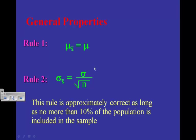Remember that, just like in proportions, the standard deviation rule is approximately correct as long as no more than 10% of the population is included in the sample. You need to consider that — it only works if the sample is no more than 10% of the population; otherwise, you can't use this rule.